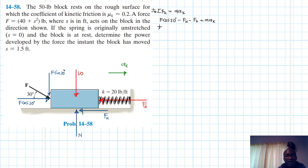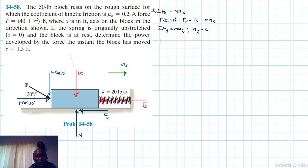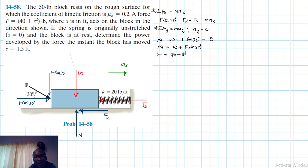Now let's find fk. Summation of forces in the y-direction equals m·ay, but ay = 0 because there is no motion in that direction. So: N − W − F sin 30 = 0, therefore N = W + F sin 30. We know F = 40 + s², and W = 50 lb.